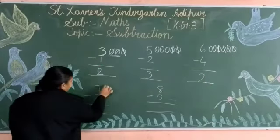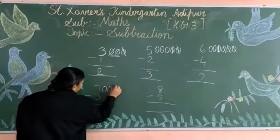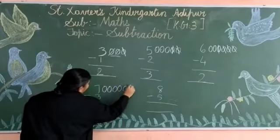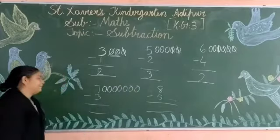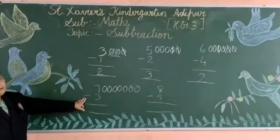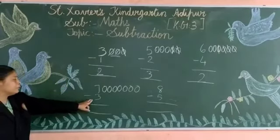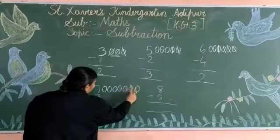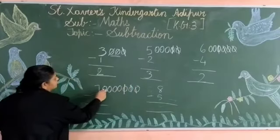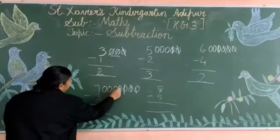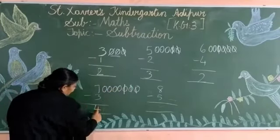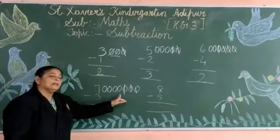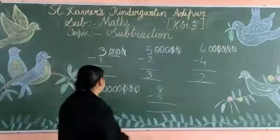Now next: 7 circles. 1, 2, 3, 4, 5, 6, 7. How many numbers you have to remove? 3. Very good. 1, 2, 3. Now count: 1, 2, 3, 4. Balance. Balance aapke paas kitna hai? Yes, 4.